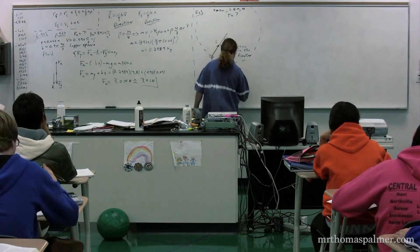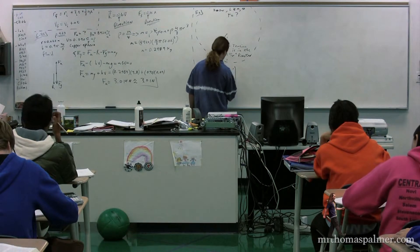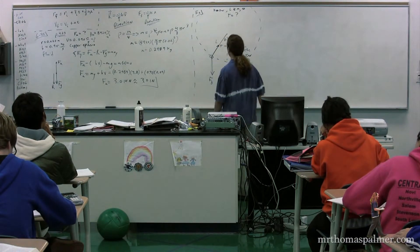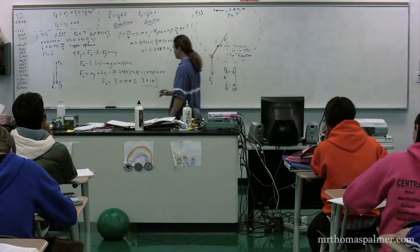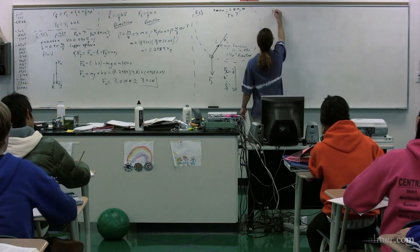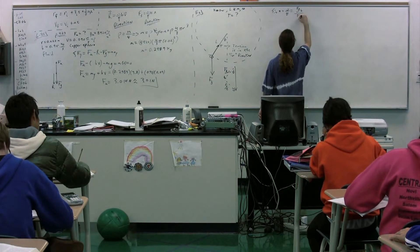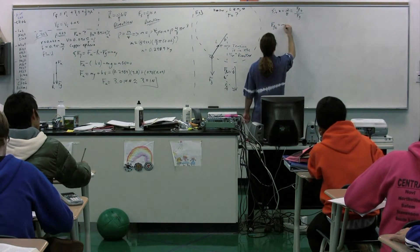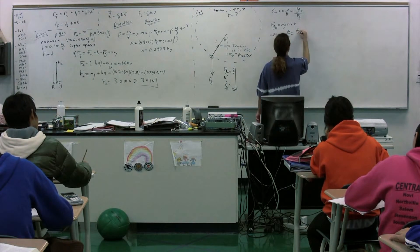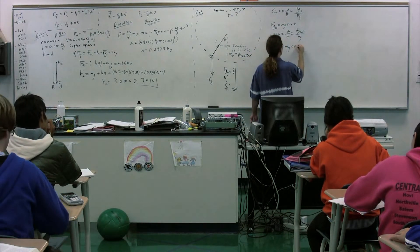We're going to break the force of gravity into its components: the force of gravity outward and the force of gravity tangential. Since sine of theta equals opposite over hypotenuse, the force of gravity tangential equals mg times sine of theta. And since cosine of theta equals adjacent over hypotenuse, the force of gravity outward equals mg times cosine of theta.